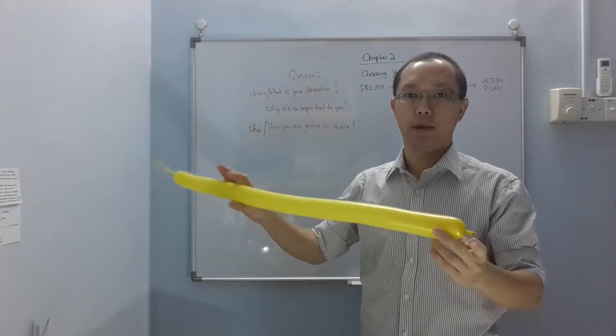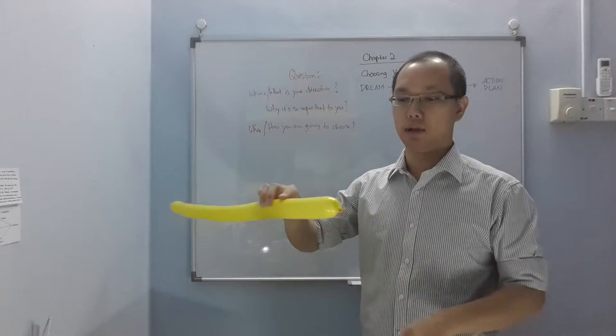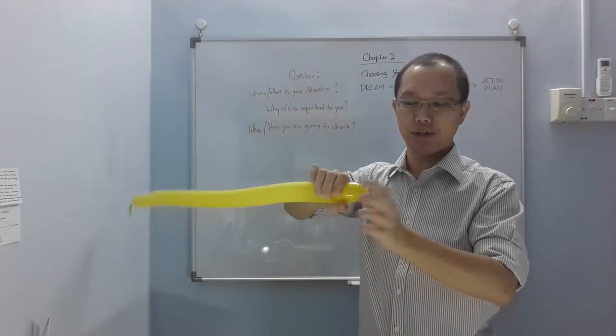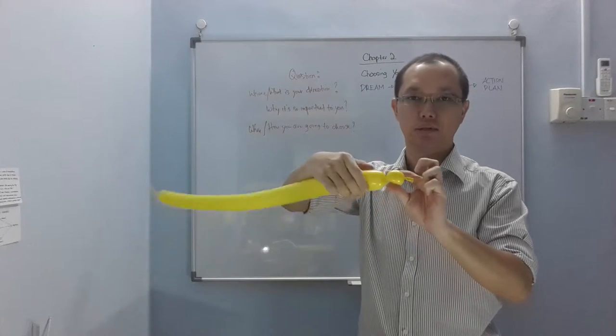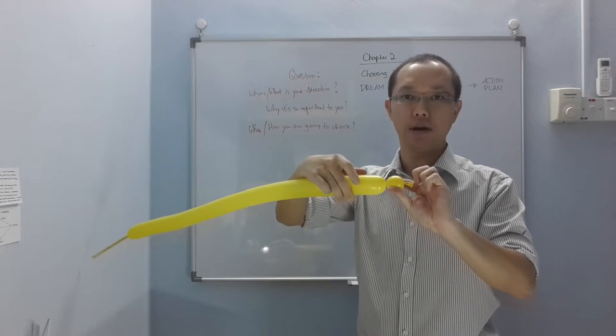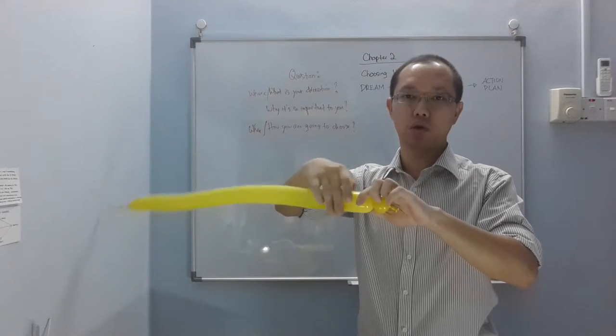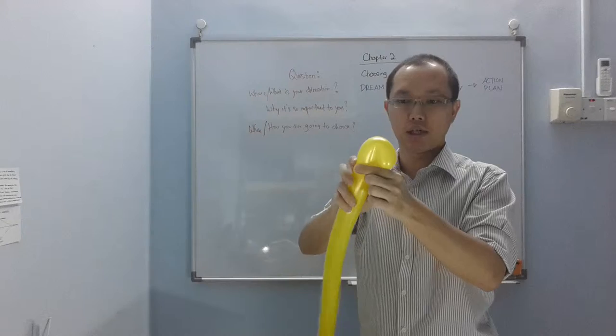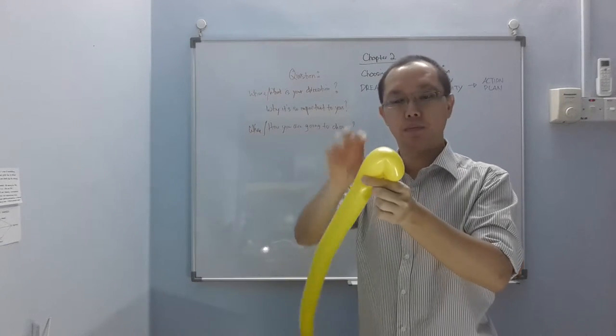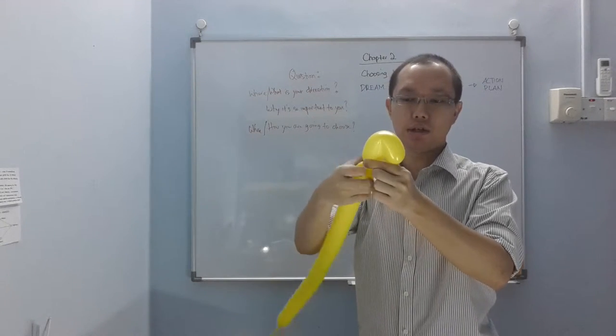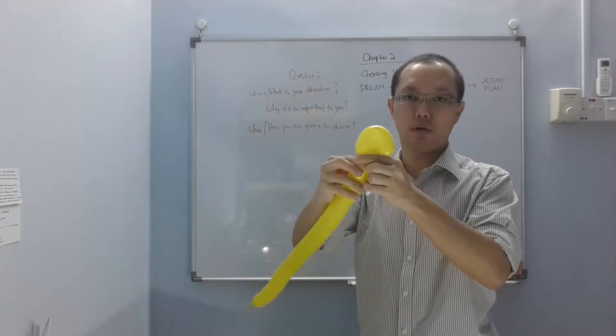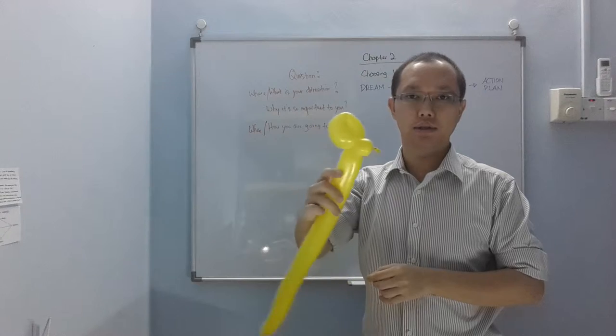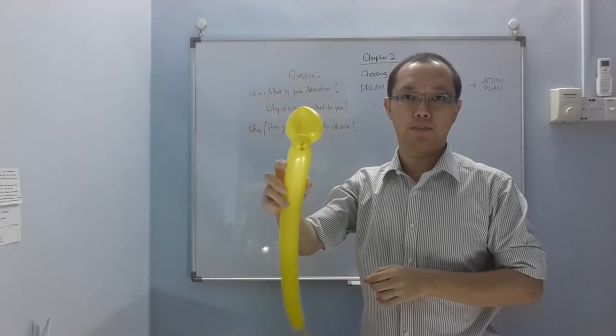We're going to start from this side. You're going to twist yourself a one-inch bubble, and then you're going to follow by doing a small loop - I think it's about two inches. Then you're going to lock this one so it looks like this, you see?